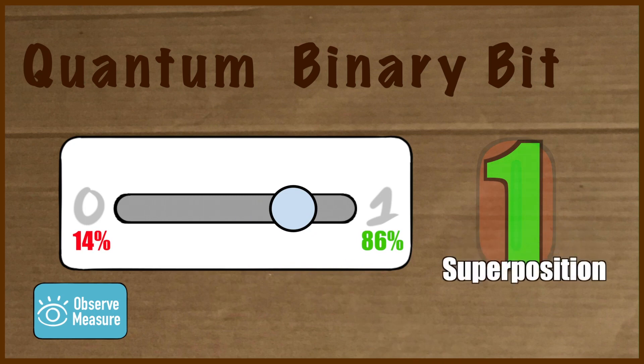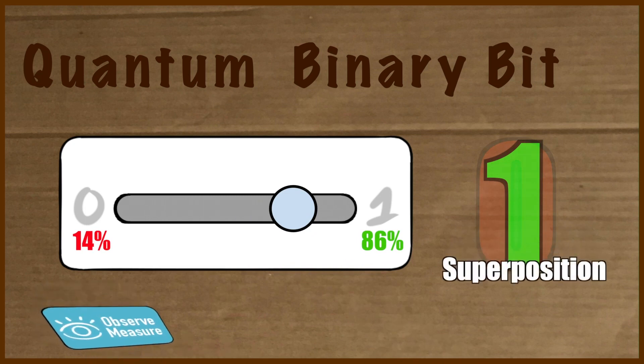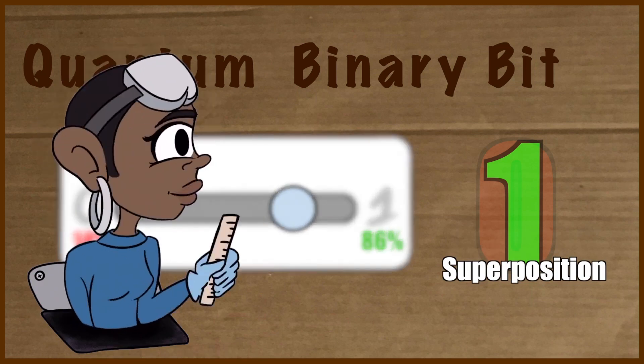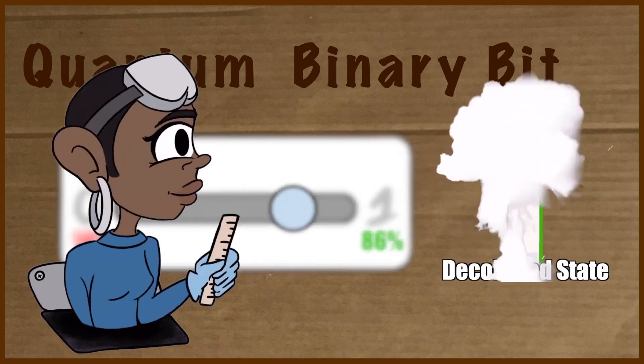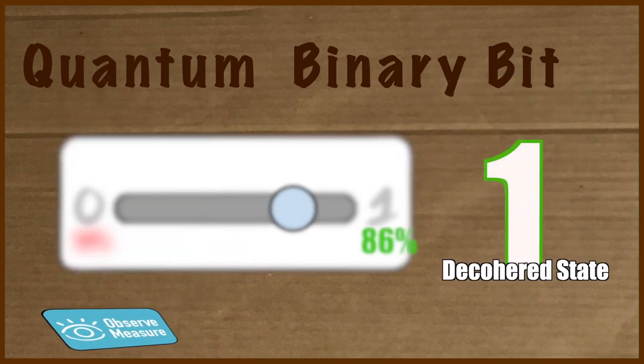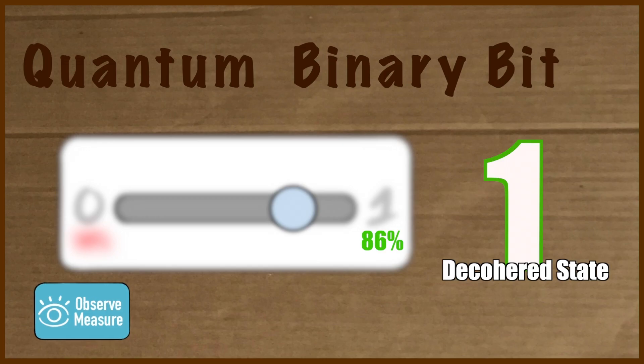The catch is, any attempt to measure a superposition will cause it to decohere. In other words, the qubit will randomly assume one of its primary states, most likely the one closest to the superposition.